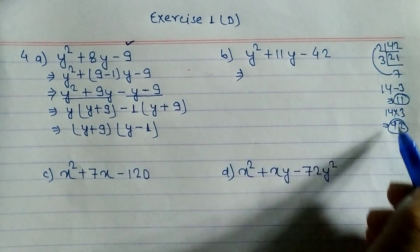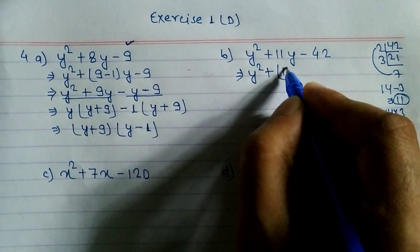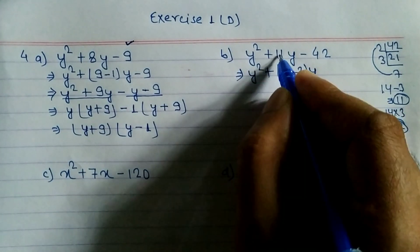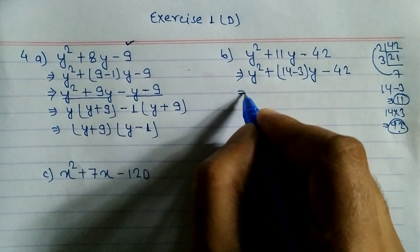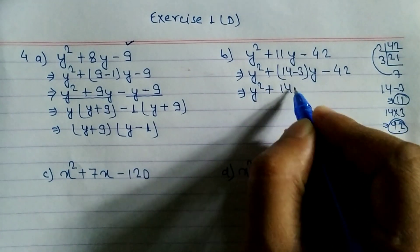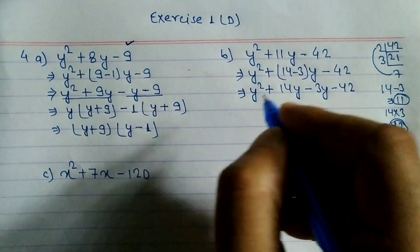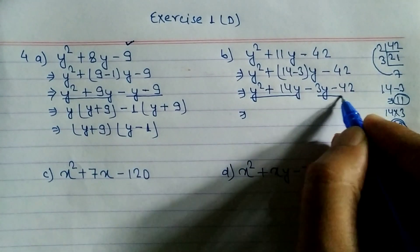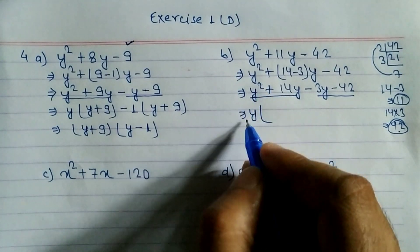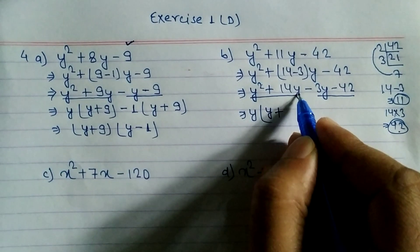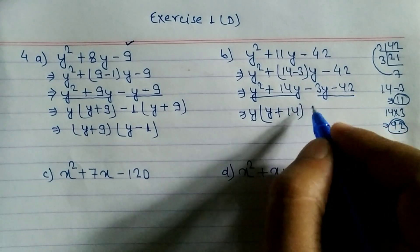We write y² + 14y - 3y - 42, replacing 11y with (14 - 3)y. Opening the bracket: y² + 14y - 3y - 42. From the first two terms take y as common: y(y + 14). From the last two terms, 3 and 42 have 3 as common factor.